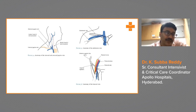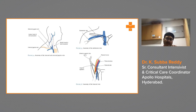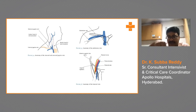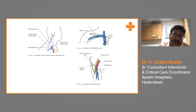For the internal jugular vein, identify the lateral and medial heads of the sternocleidomastoid — the internal jugular vein originates between them; the external jugular vein is lateral. For the subclavian vein, identify the junction of medial one-third and lateral two-thirds of the clavicle, aim toward the sternal notch with a slight downward angulation, aspirate blood, and thread the guidewire. For the femoral approach, the arrangement from medial to lateral is femoral vein, femoral artery, femoral nerve — always palpate the femoral artery before proceeding.